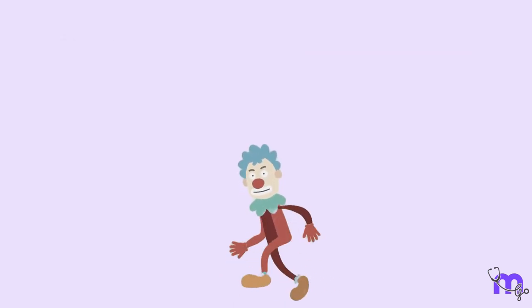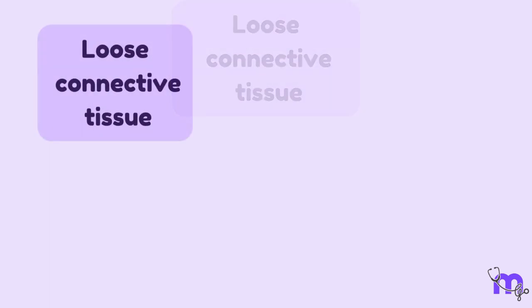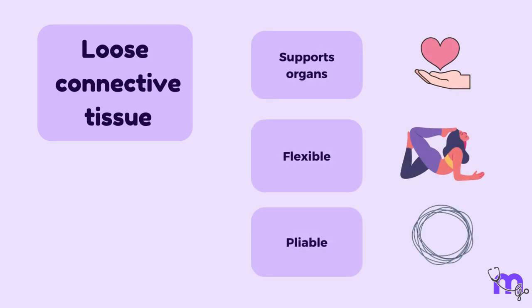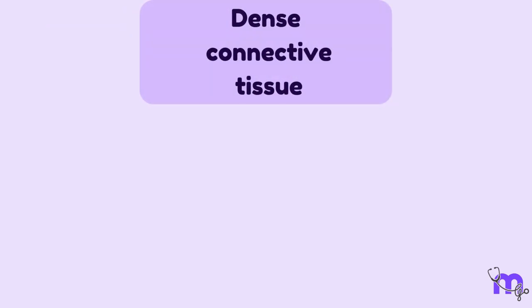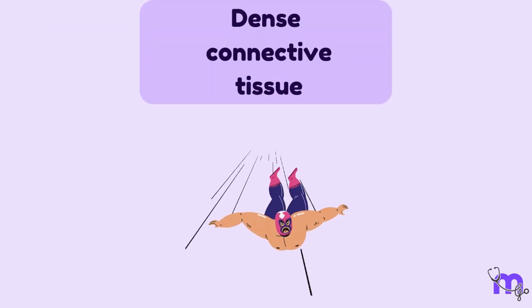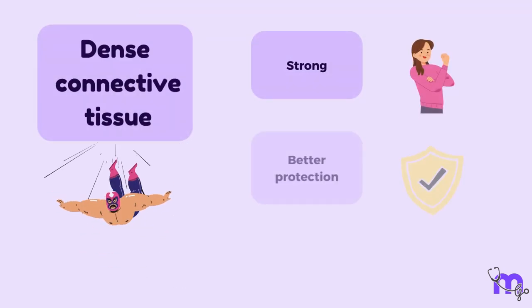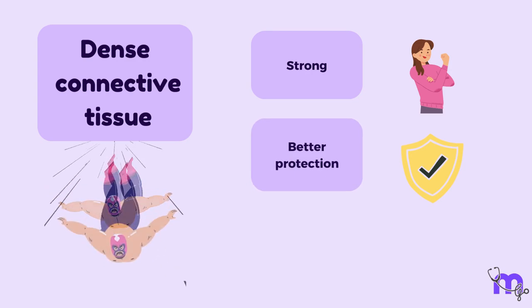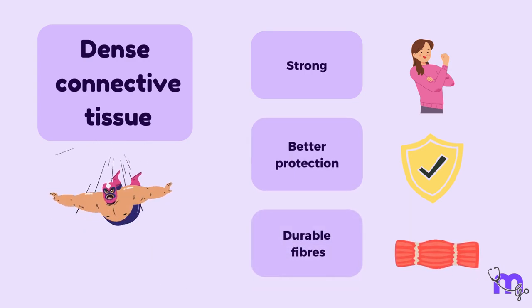A light, easy comedy is what we can call loose connective tissue. Although it supports the organs it surrounds, it is flexible and pliable. On the other hand, dense connective tissue is like a high-intensity action movie — it is strong, provides better protection, and has tightly packed fibers that offer durability.